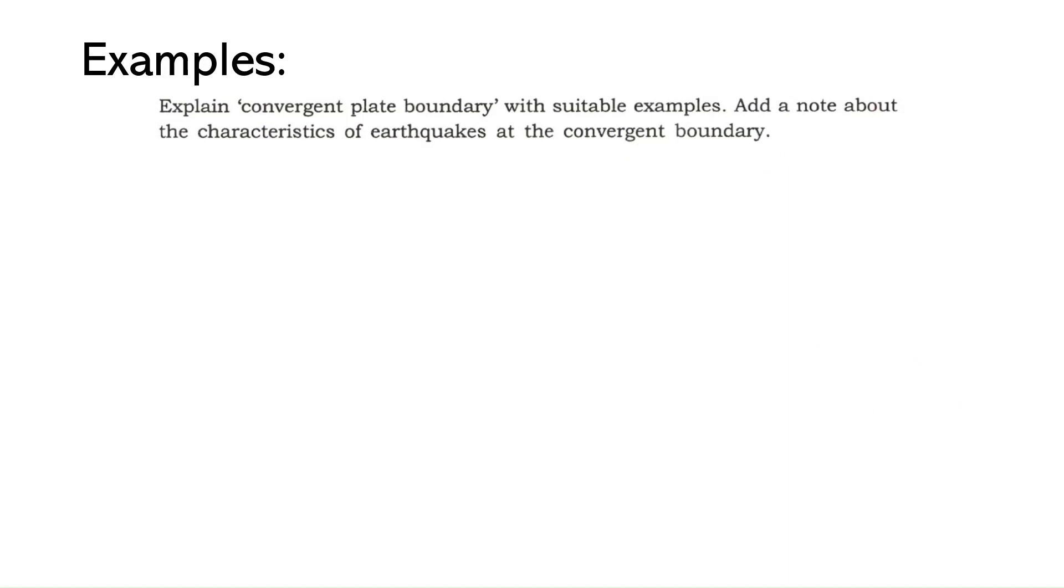This question was asked in UPSC CSE 2022 mains paper 1. And it says, explain convergent plate boundary with suitable examples, add a note about the characteristics of earthquakes at the convergent plate boundaries. So first of all, you need to keep in mind that this is a 10 marker question and we have a restricted word limit of 150 to 200 words for each question. And we cannot exceed that word limit as this will attract penalty. So we need to be very precise while touching upon each segment of the question.